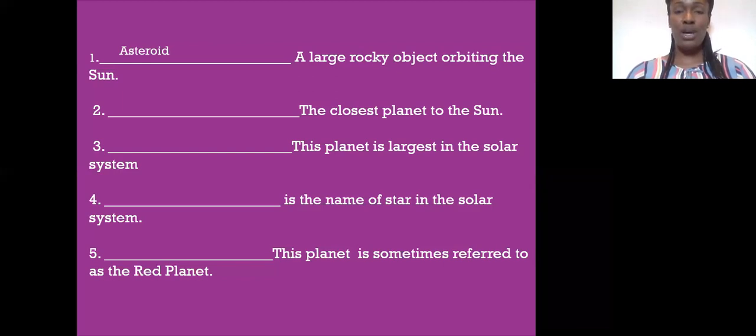Number two, the closest planet to the Sun. Think about that acronym that we said. What is the first one? If you said Mercury, you are correct.